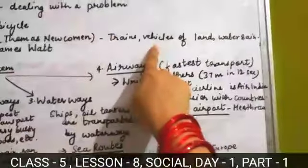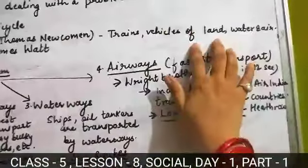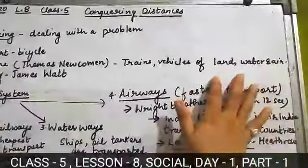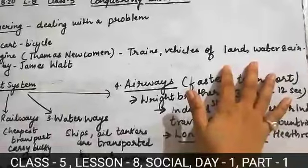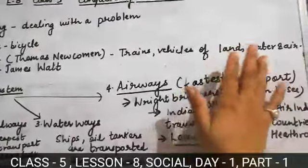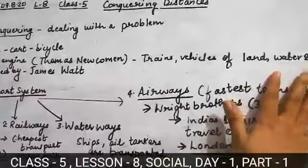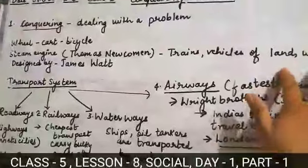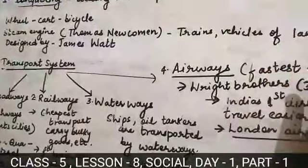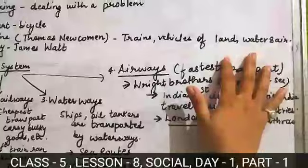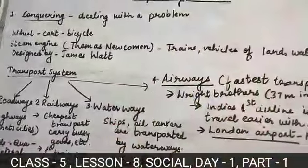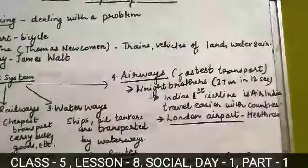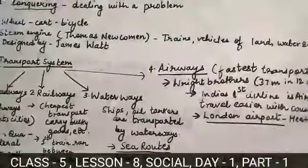Because of the steam engine, we are able to move trains, vehicles running on land, water, and air. All the vehicles which run on land, water, and air — the steam engine improved that area. All credit goes to the steam engine, which is fitted in trains, aeroplanes, bikes, motorcycles, and all things running on land.